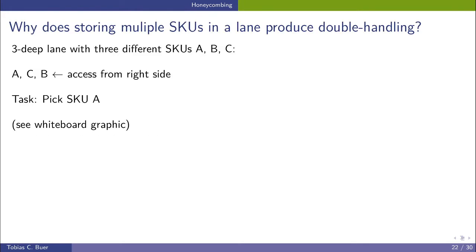First of all, why does storing multiple SKUs in a single lane produce double handling? Let's assume we have a three deep lane and consequently we have three storage positions for pallets. But on each of these pallets a different SKU is stored.